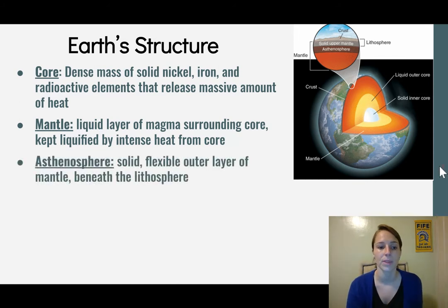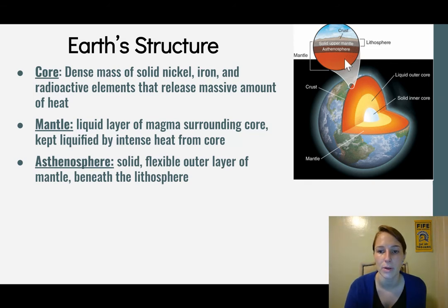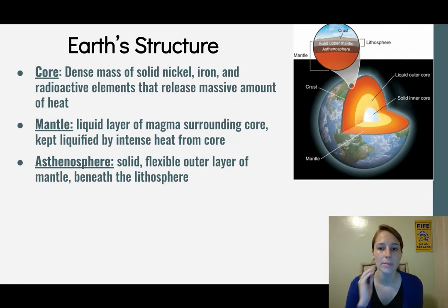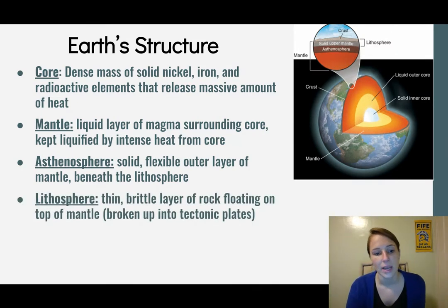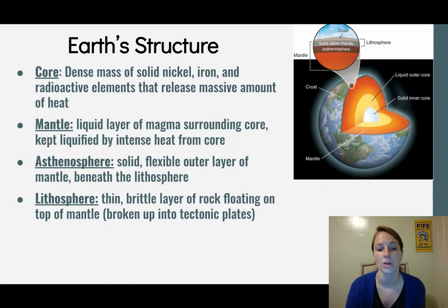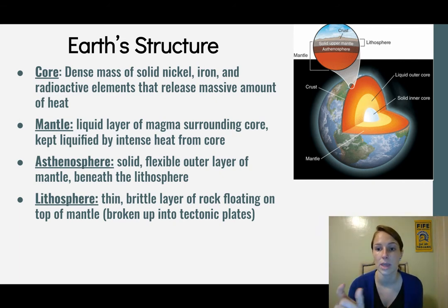Looking at the zoomed-in diagram, we can see the mantle and the magma. The next layer is the asthenosphere, which is a solid, flexible outer layer of the mantle beneath the lithosphere. The lithosphere is a thin, brittle layer of rock floating on top of the mantle, and it's broken up into tectonic plates — this is a lot of what we'll be talking about today.